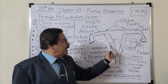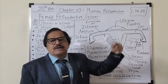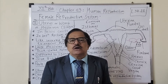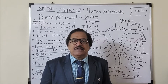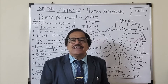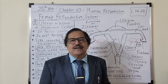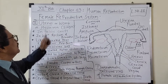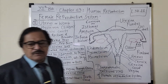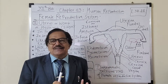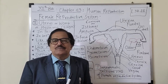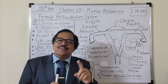The uterus has two other names: one is known as the womb, and the other is known as the hystera. So, uterus, womb, and hystera are the same structure. It is single and unpaired — whereas ovaries are paired and oviducts are paired, the uterus is only one.